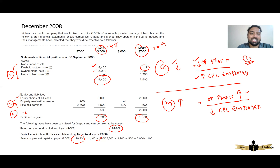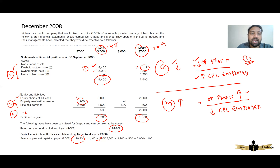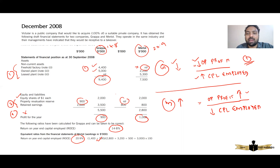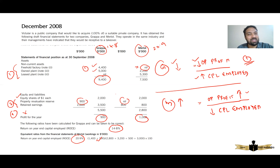Also check the equity — specifically whether there has been any revaluation. Yes, Grappa's property has been revalued, whereas Merlot was not revalued. When there is a revaluation surplus, equity increases. If equity increases, capital employed also increases. If capital employed increases, ROCE will reduce. So we have one more reason: ROCE of Grappa is lower because it has a revaluation surplus, which results in higher capital employed, which in turn results in a lower ROCE.